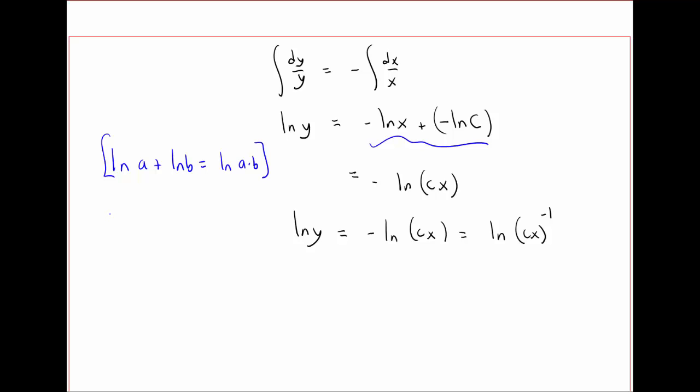Since also to the side here we know that natural log of a to the -1 is equal to negative natural log a. So that's what we did here. So now we can take the exponent of both sides. Because e to the natural log of y is just y. And e to the natural log of cx to the -1 is equal to cx to the -1.